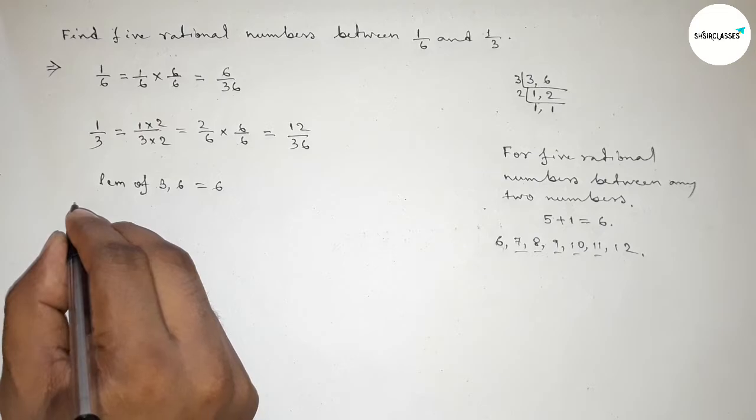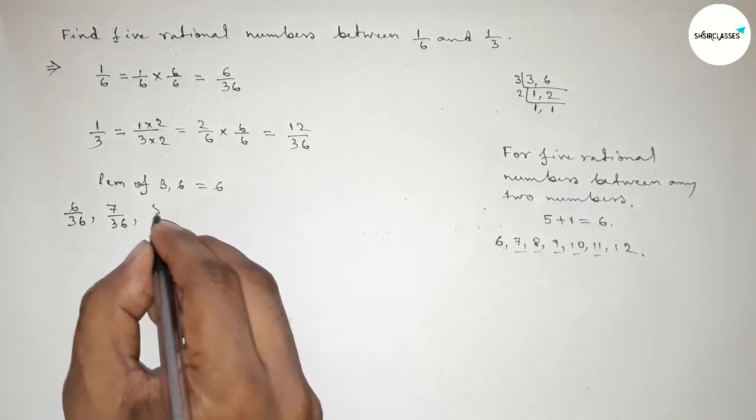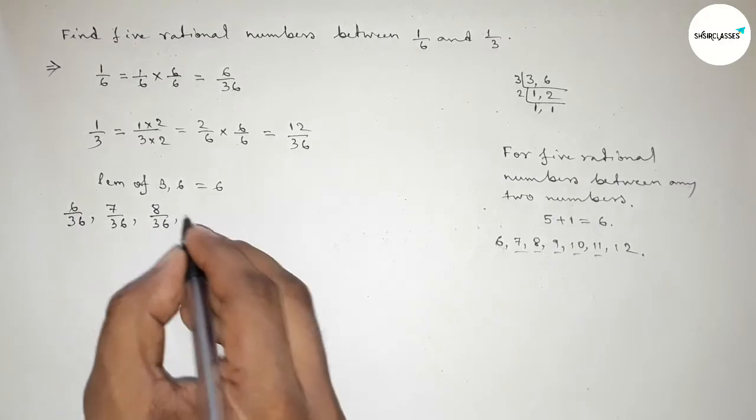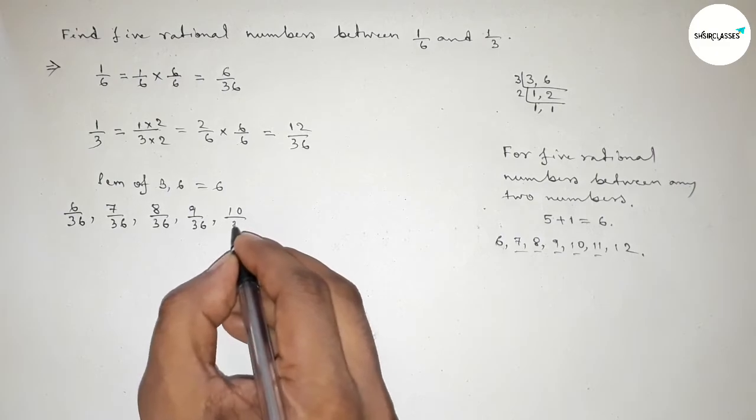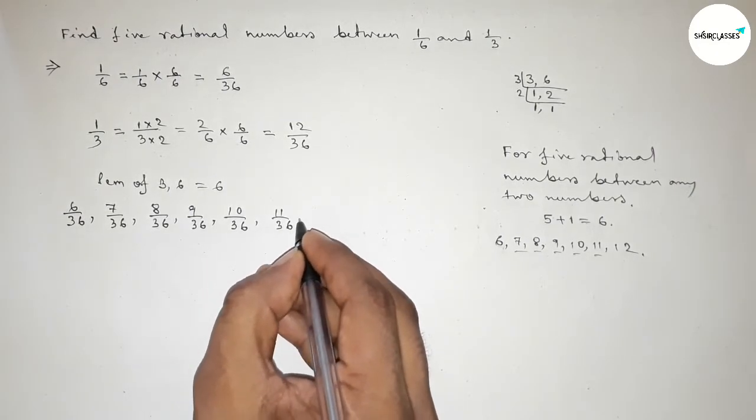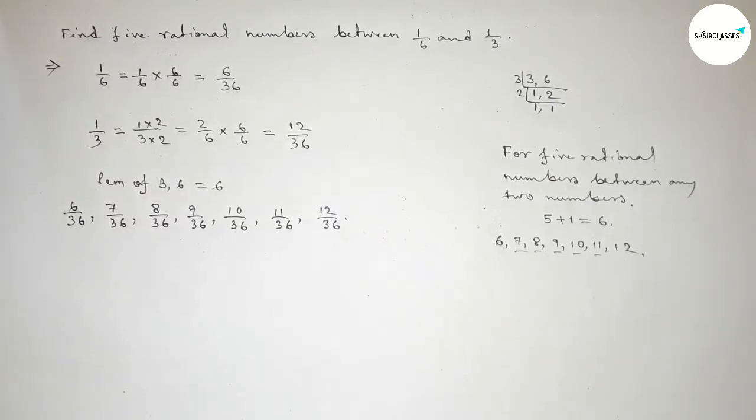And here also write down all the rational numbers. So first one 6 over 36, 7 over 36, 8 over 36, 9 over 36, 10 over 36, 11 over 36, and last one 12 over 36. And among these, these are the required five rational numbers.